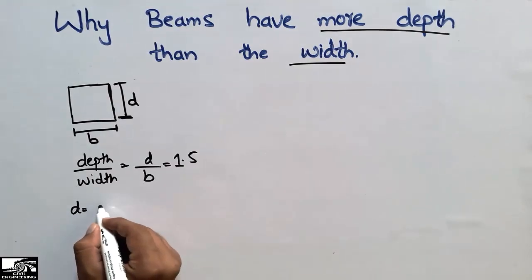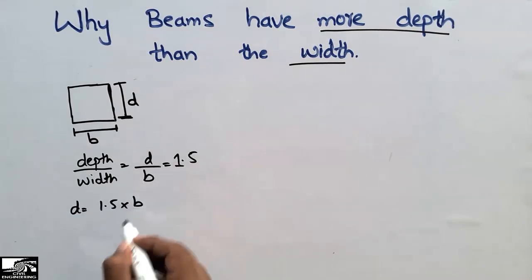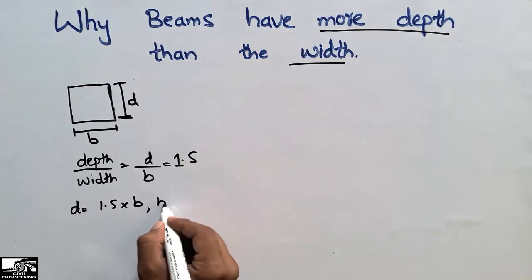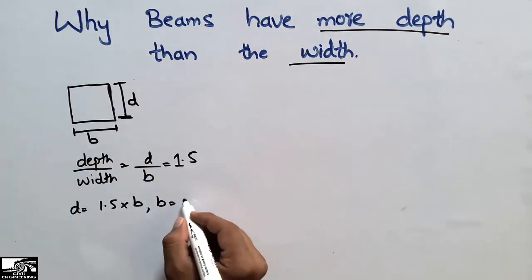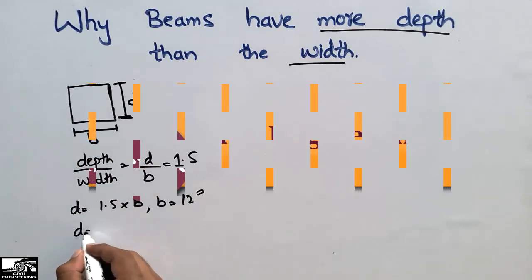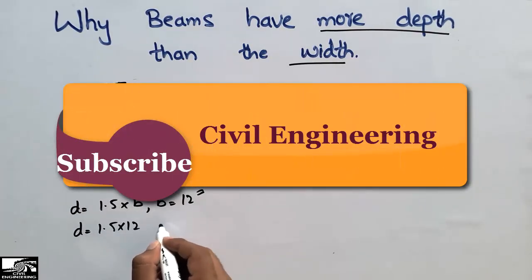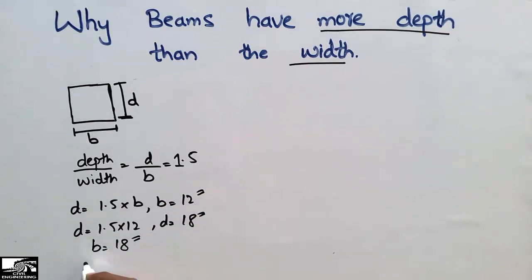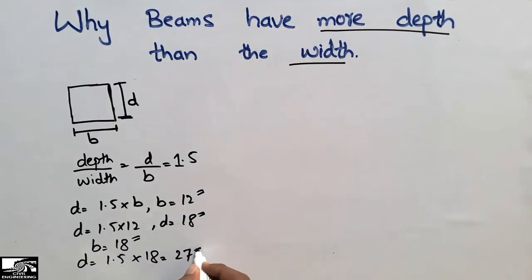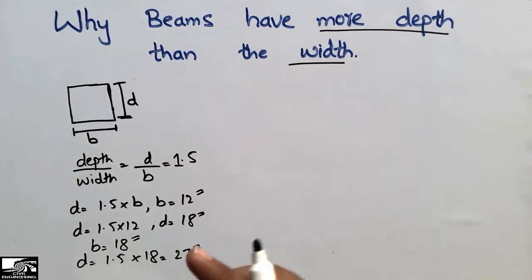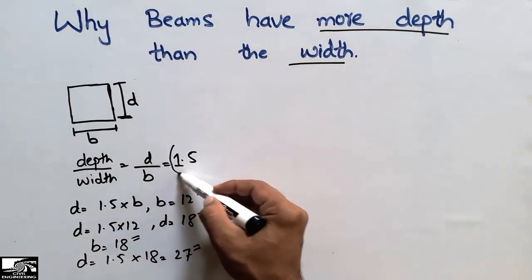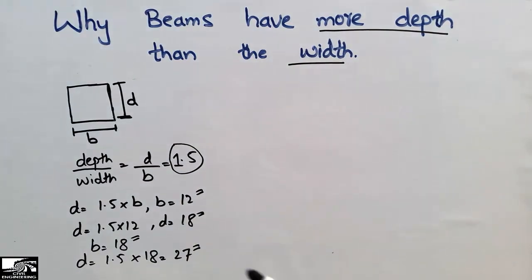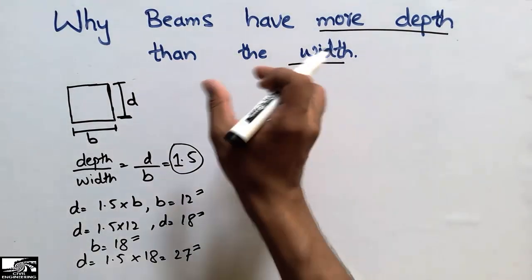It means the depth is 1.5 times the width of the beam. For example, if the width of the beam is 12 inches, then the depth will be 12 × 1.5 = 18 inches. Similarly, if you have a width of 18 inches, the depth comes out to be 18 × 1.5 = 27 inches. So usually the depth of beams is greater by a ratio of 1.5.